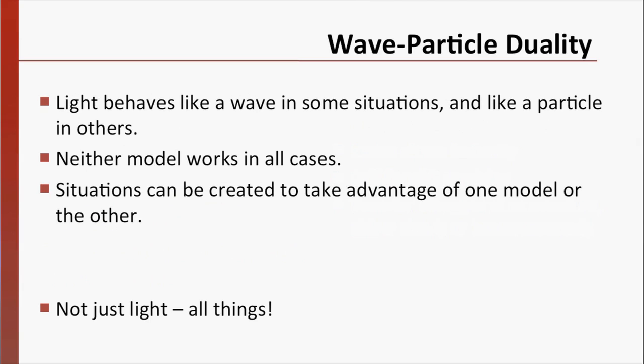This leads to a phenomenon called wave-particle duality. In some situations, light seems to behave in a manner predicted by the wave model. At other times, it behaves in a particle-like way. We cannot rely just on the wave model of light, or just on the particle model. Neither of our models works in every possible situation. Scientists and engineers typically set up situations to take advantage of one model or the other, using the particle-like or wave-like behaviors of light to their advantage.